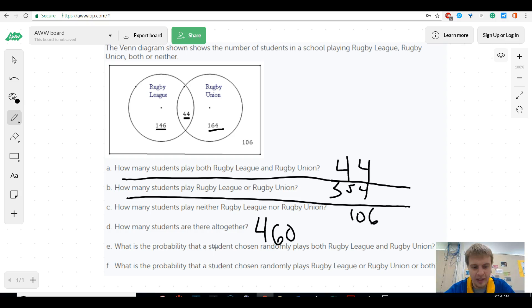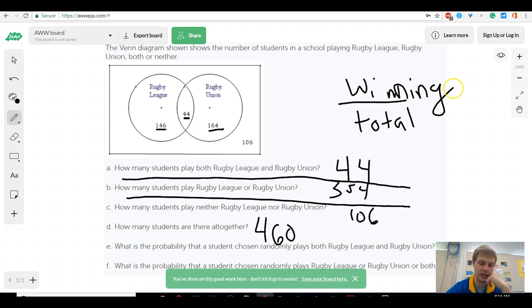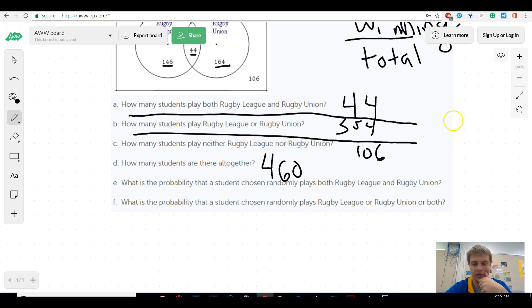And it says, what is the probability? Now, as soon as it says probability, I want you to think of probability is always the total over your chance of getting it right or winning. So we're going to figure out what's our chance of getting it right, which they said we get it right if the student is both in the rugby league and the rugby union, which that would be this overlap right here. So that'd be 44 over our total, and our total we just did, which is 460.